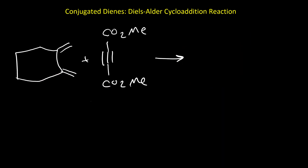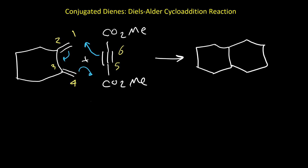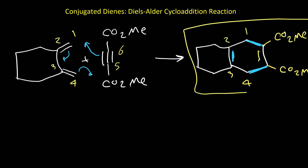Here is another example where the dienophile is an alkyne — a triple bond instead of a double bond. Carbons 5 and 6 correspond to the triple bond. The diene portion reacts normally, forming the new sigma bonds shown in blue. Since only one pi bond of the triple bond participates in the Diels-Alder reaction, there remains an additional pi bond between carbons 5 and 6, giving us a cyclohexadiene product. On carbons 5 and 6 we have two ester groups (CO2Me). This is our product.